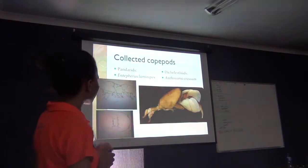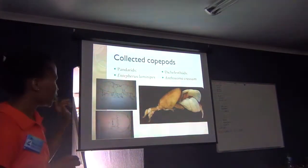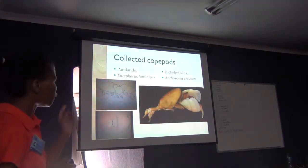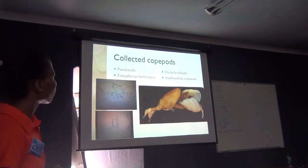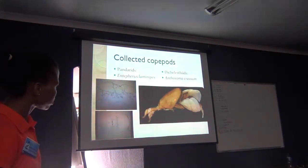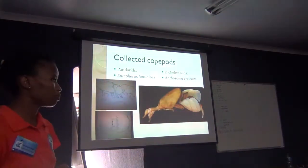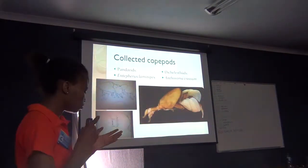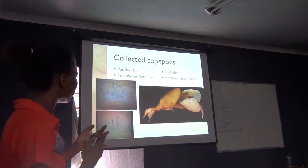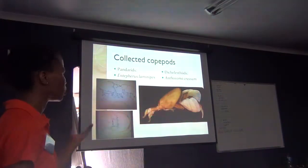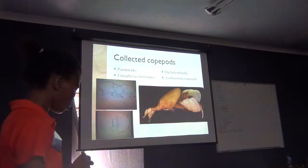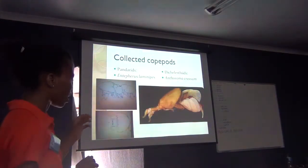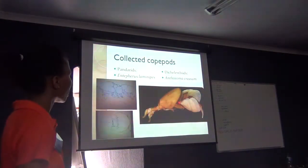The last two families: in the family Pandaridae we have Interferous laminipus, and in the family Dechelesidae we have Anthosoma crassum. Anthosoma crassum is not restricted to any particular shark species — we find them everywhere, including great white sharks and other sharks as well as mobula rays. While Interferous laminipus has only been reported from mobula rays. So all of them are quite specific except for Anthosoma crassum.